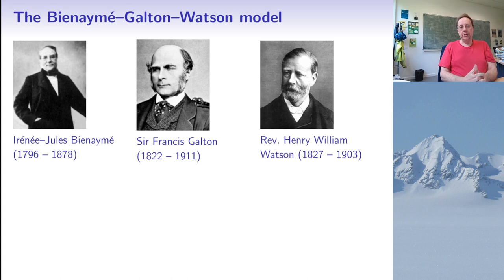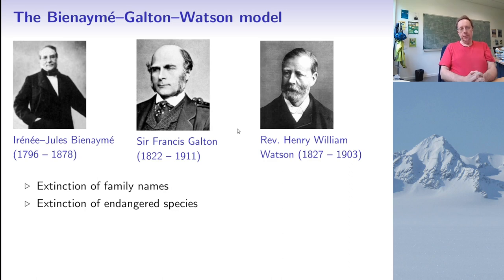It turns out that actually the French mathematician Bienaymé had already studied this model before but Galton and Watson apparently were not aware of that. So Sir Francis Galton was concerned with the disappearance, the extinction of certain aristocratic family names in England at his time. So at that time family names were only transmitted through male descendants and whenever an aristocratic family would have no male descendants, no sons, or their sons would not have any children, the family name would disappear.